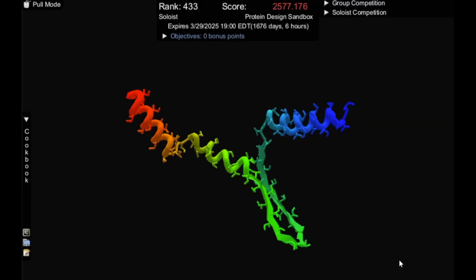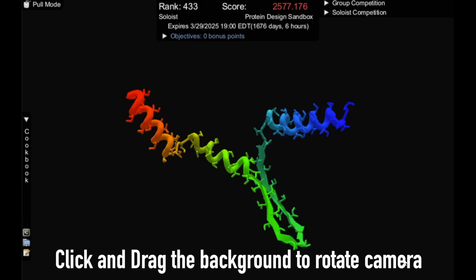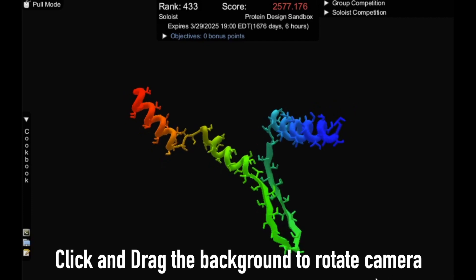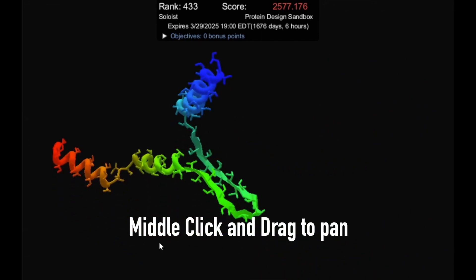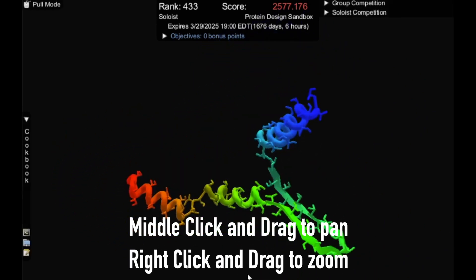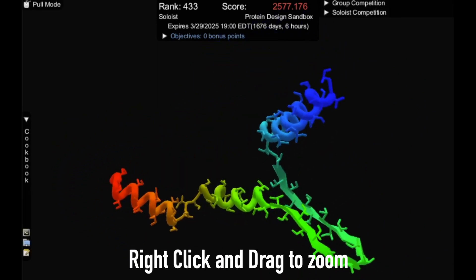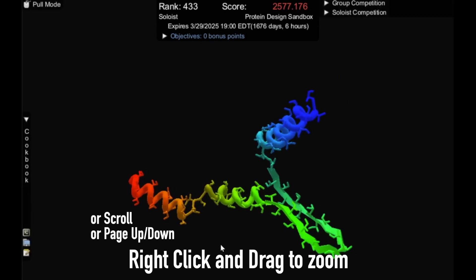Let's talk basic controls. Click and drag the background to rotate your camera around. Middle click and drag to pan and right click and drag to zoom. You can also zoom with the scroll wheel or the page up page down keys.